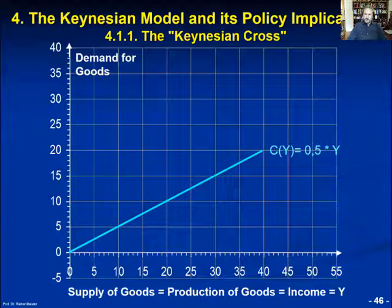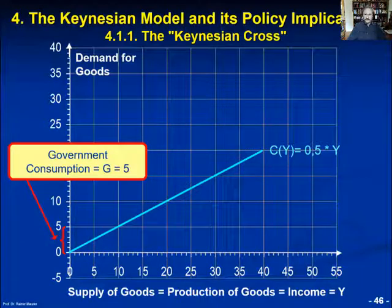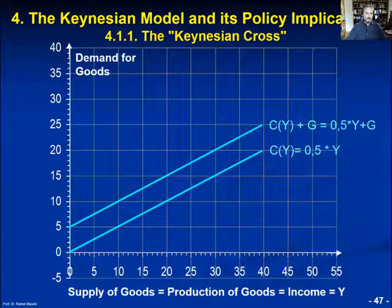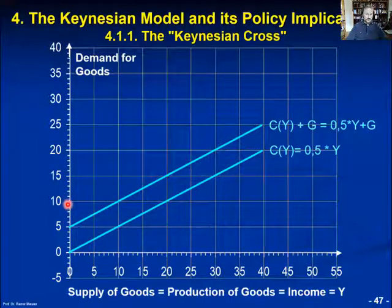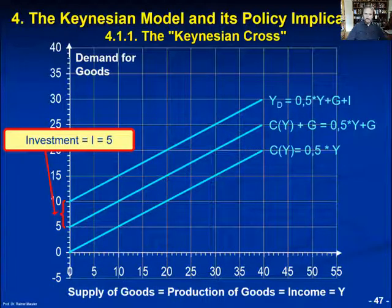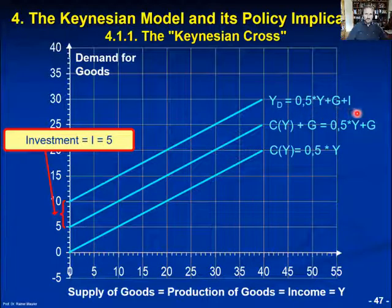If total demand equals consumption demand plus government expenditure of, let's assume, 5 units GDP, we have to add government consumption vertically to the consumption function. So the total demand for goods is 5 units higher than the consumption function. If we additionally have 5 units of investment goods demand by private firms, we add these 5 units to receive the total demand function. Now we have a total demand function consisting of three components: consumption demand from households plus government consumption demand plus investment goods demand.